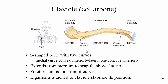Looking at the clavicle or collarbone — here we're looking at the bottom of it. You'll notice two ends: a flat end and a rounded end. The rounded end attaches to the sternum at the sternoclavicular joint. The acromial end is flat and attaches to the acromion or acromial process of the scapula, which is also flat, facilitating that articulation.